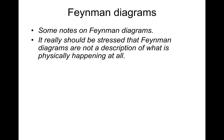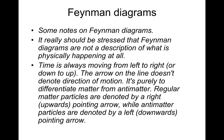Just some notes on Feynman diagrams. It really should be stressed that Feynman diagrams are not a description of what is physically happening at all. Time on Feynman diagrams is always moving from left to right, or from bottom to top. The arrow on the line doesn't denote direction of motion — it's purely to differentiate matter from antimatter. Regular matter particles are denoted by a right or upwards pointing arrow, and antimatter particles are denoted by a left or downwards pointing arrow.